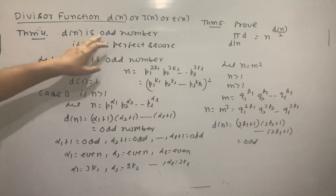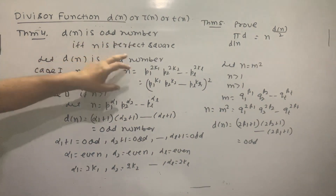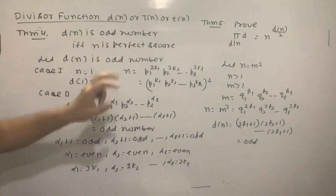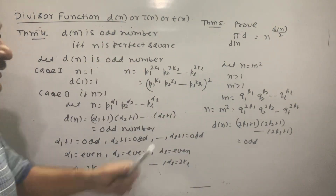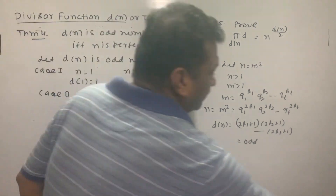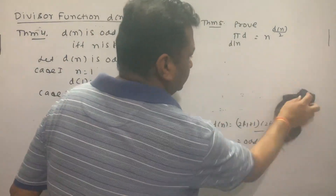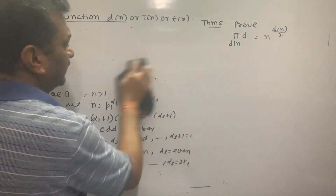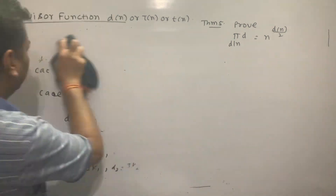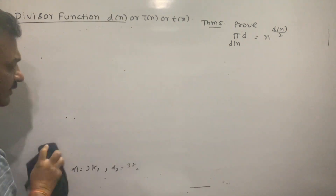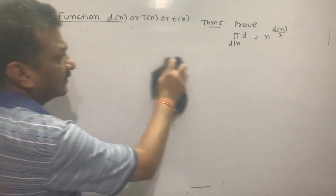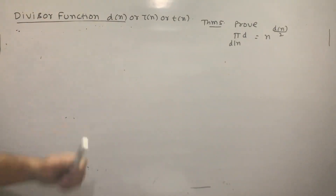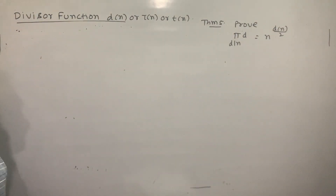Each factor (2βᵢ + 1) is odd, so d(n) is an odd number. This completes the proof. Next, Theorem 5: we need to prove that the product of divisors d of n is equal to n^(d(n)/2).